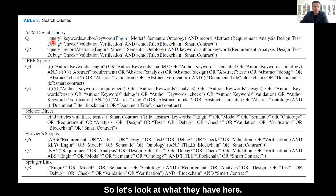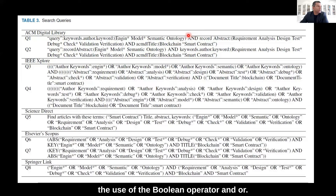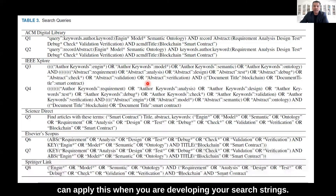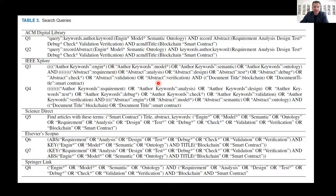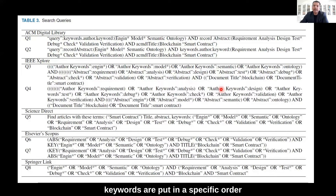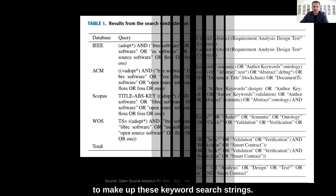Looking at the query, two key things you can see here are the use of the boolean operators AND and OR. I will show you what this means and how you can apply it when developing your search strings. For now, just look at the different keywords they have used: debug, check, validation, model, semantic, ontology, requirements, and so on. These keywords are put in a specific order to make up keyword search strings.